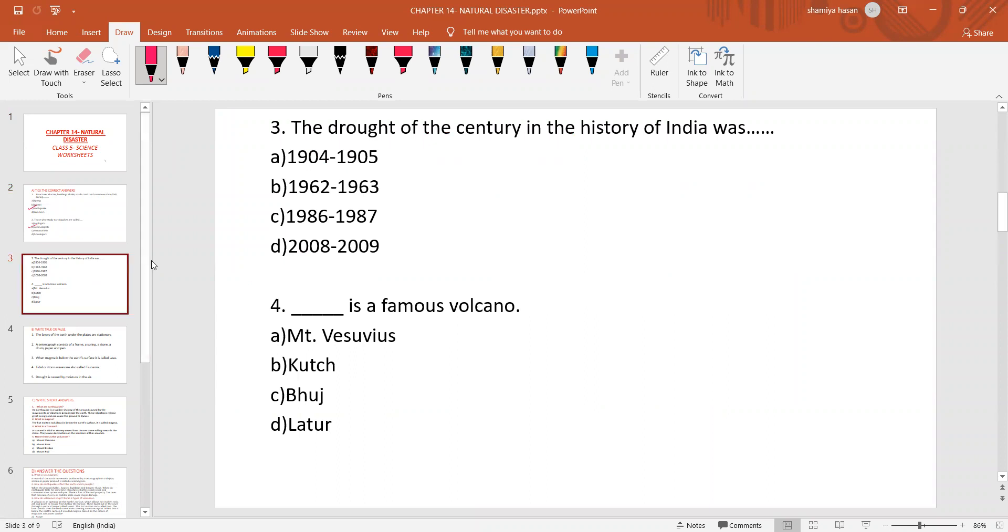The drought of the century in the history of India was 1904-1905, 1962-1963, 1986-1987, 2008-2009. So the answer is 1986-1987.